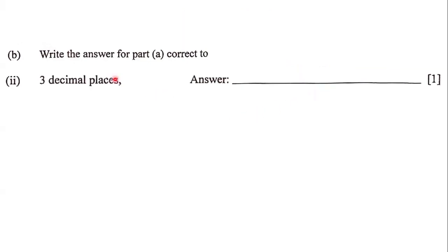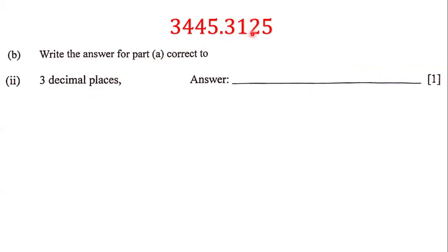Next, the question states: write the answer for part A correct to three decimal places. We look for the number in the third decimal place — one, two, three — so the digit 2 is in the third decimal place and we circle it. The number to the right of 2 is 5, and since 5 or greater means we round up, we add one to 2.